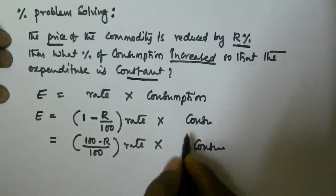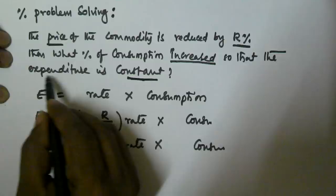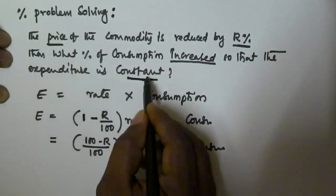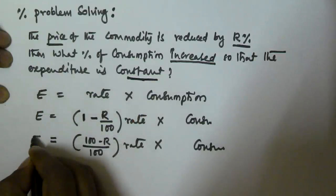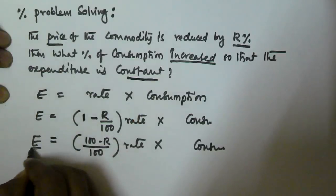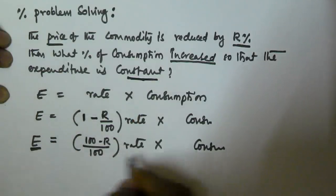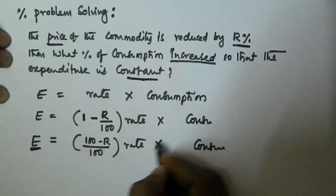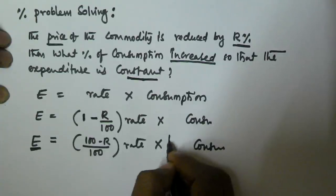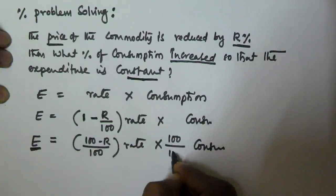But here the expenditure is going to be constant. So, to keep expenditure constant, we have to multiply consumption by 100/(100 minus R).